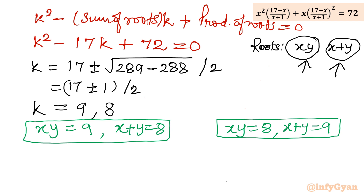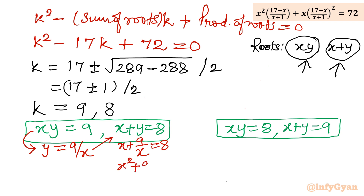From the first set, y equals 9 over x. Substituting into x plus y equals 8 gives x plus 9/x equals 8. Multiplying through by x: x² plus 9 equals 8x, so x² minus 8x plus 9 equals 0.